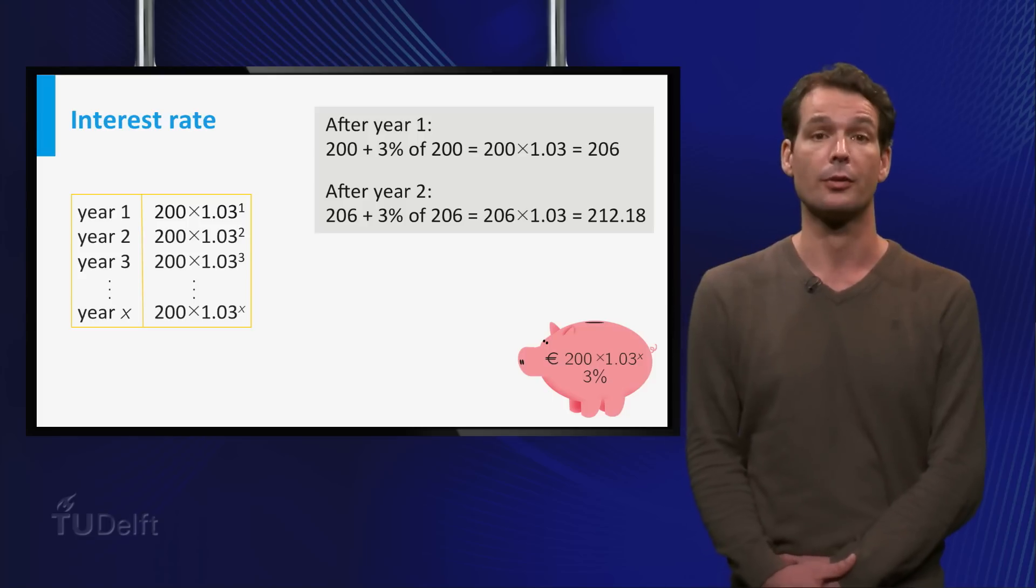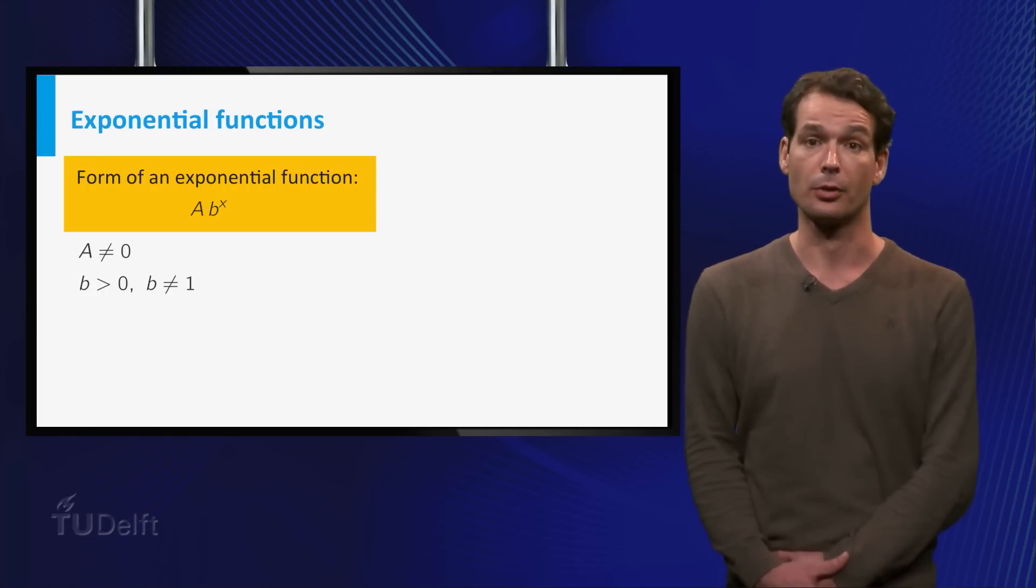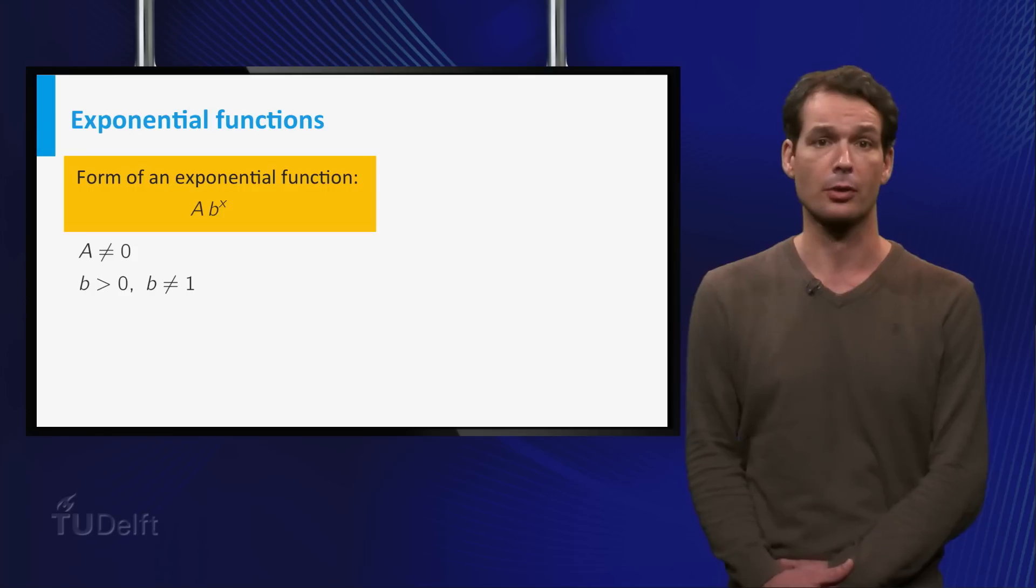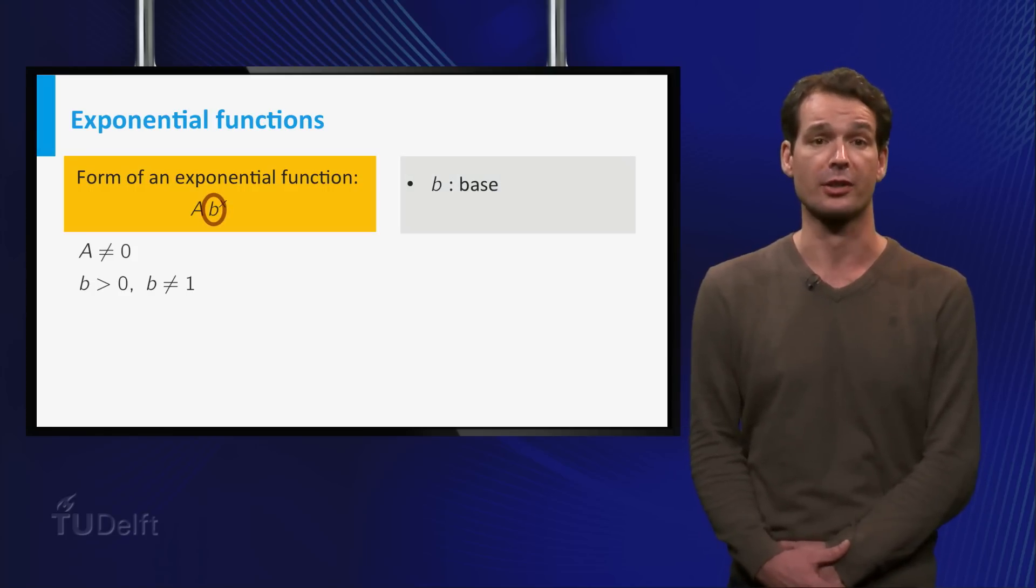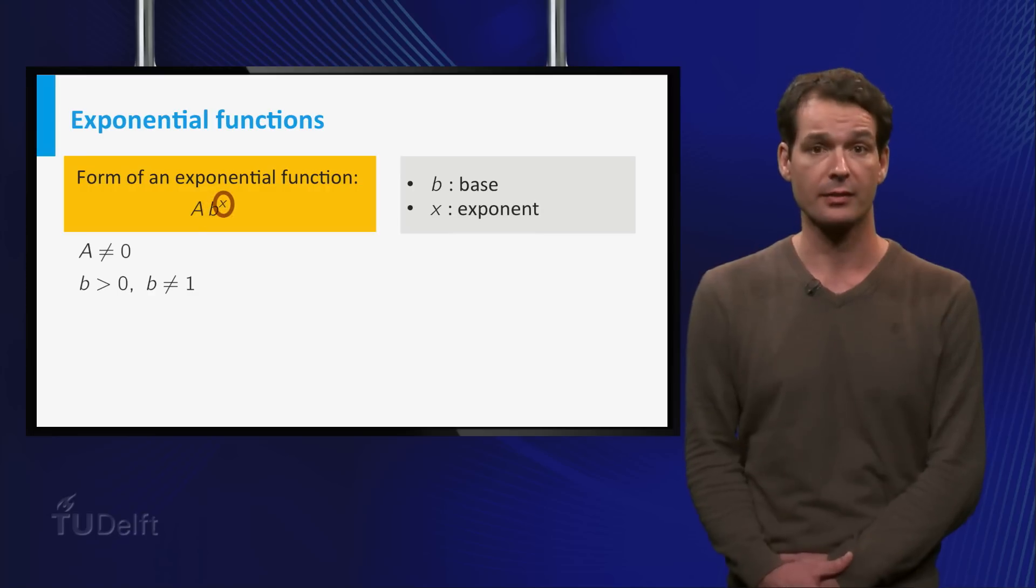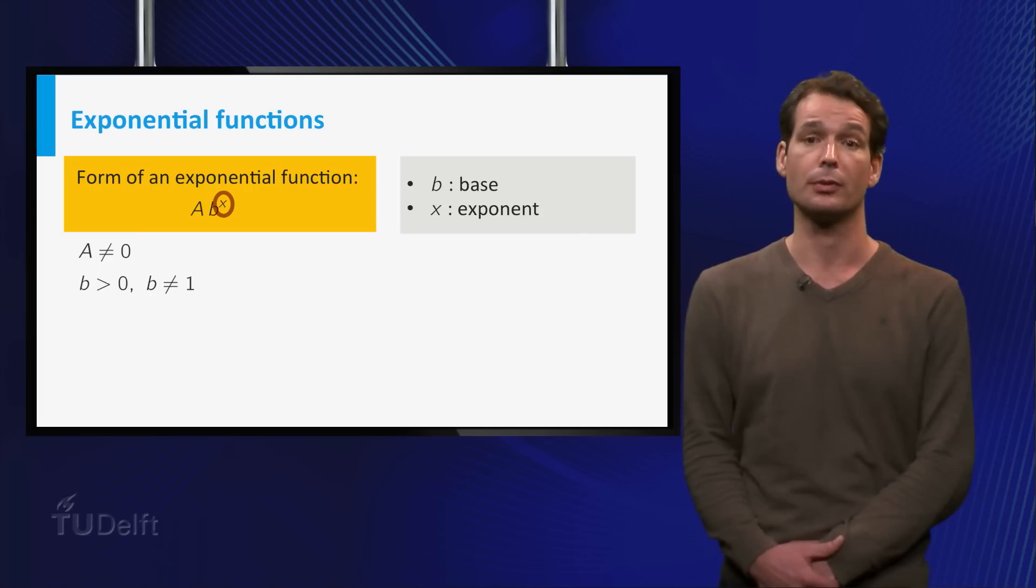This is an example of an exponential function. In general, an exponential function has the form a times b to the power x. Here a is some non-zero constant and b is a positive number called the base of the exponential function. The number x is called the exponent. We will assume that b is not equal to 1 since this would just give you a constant function.